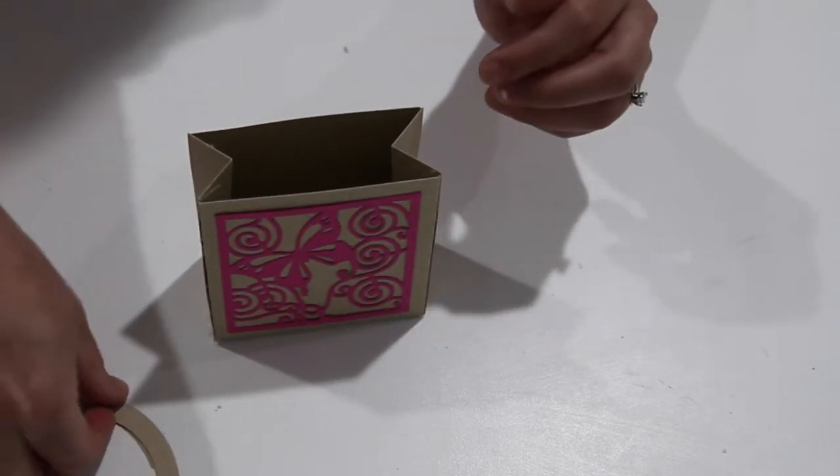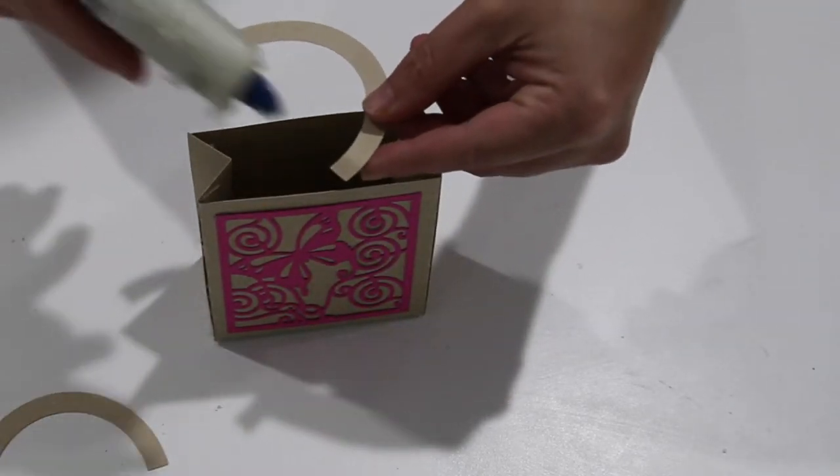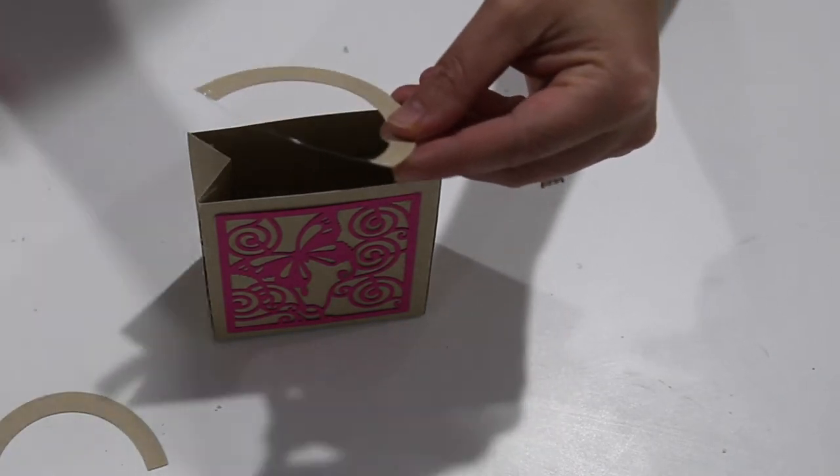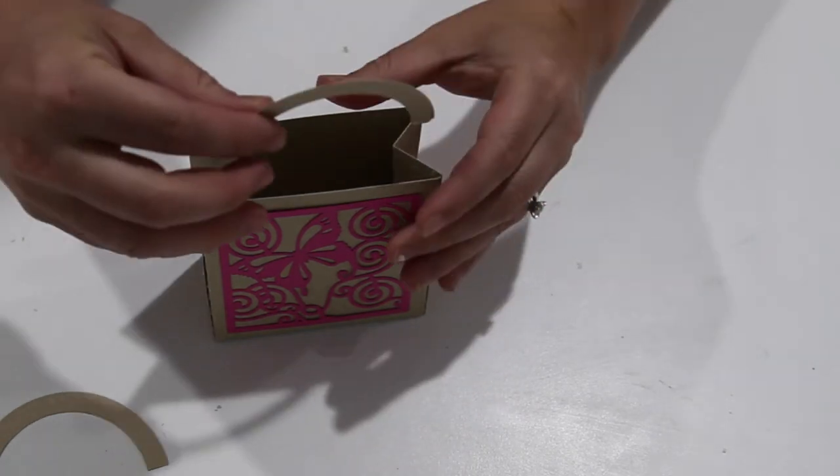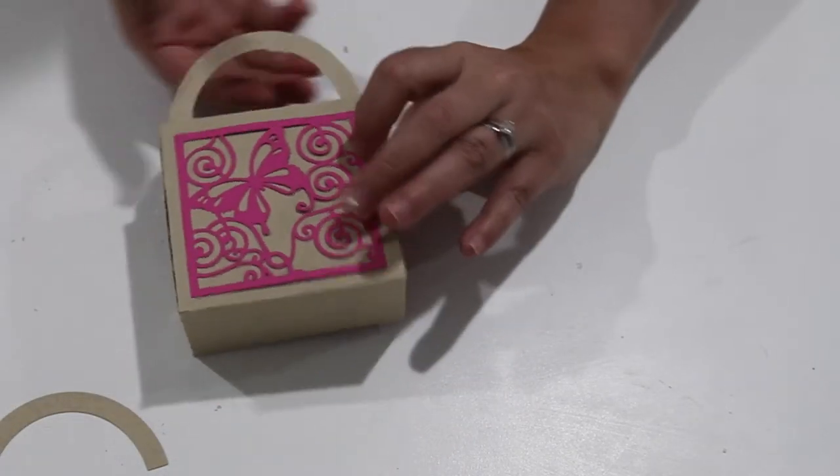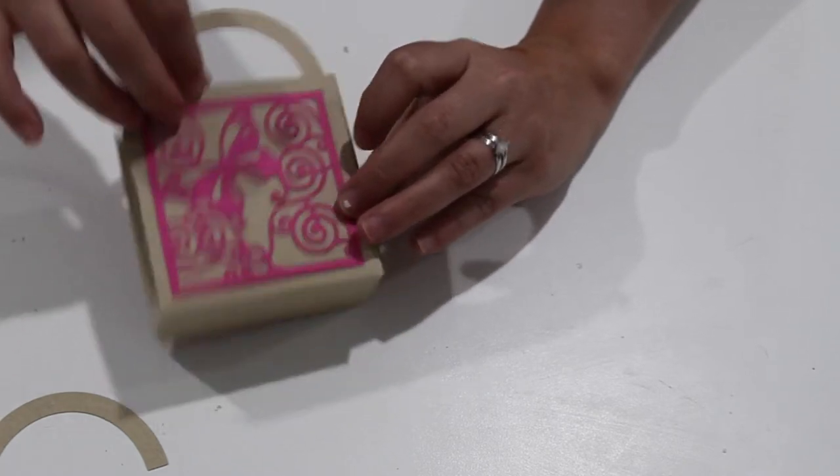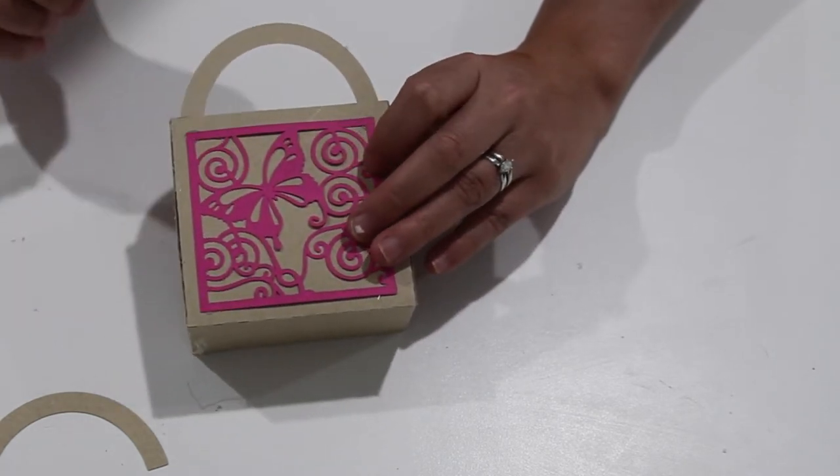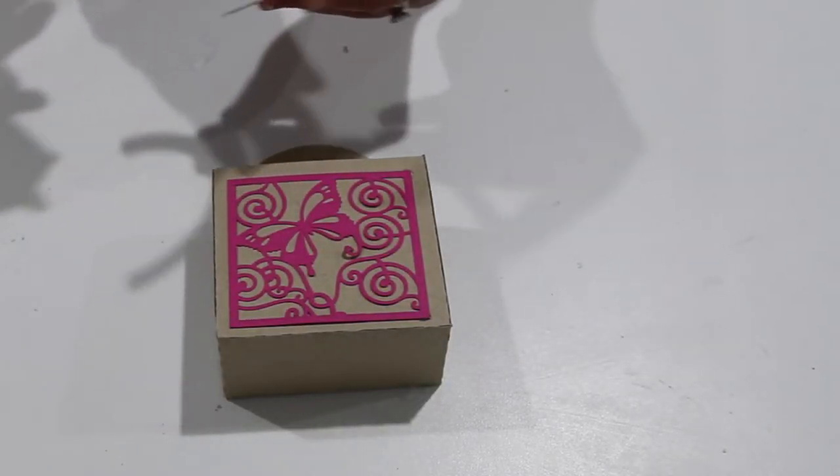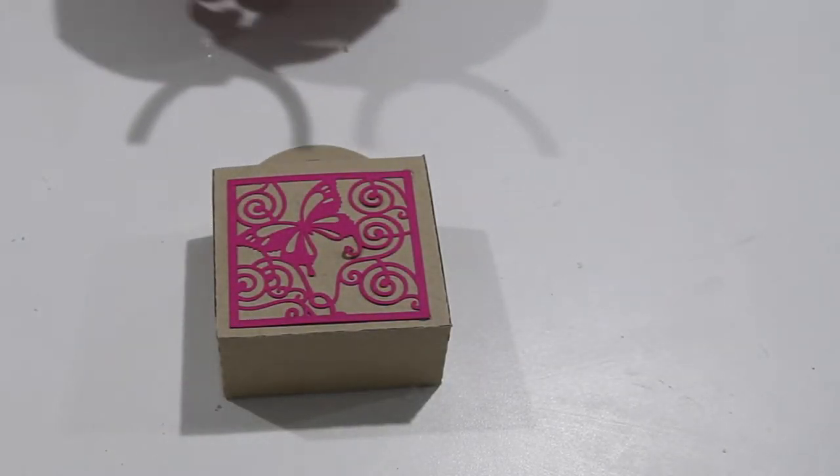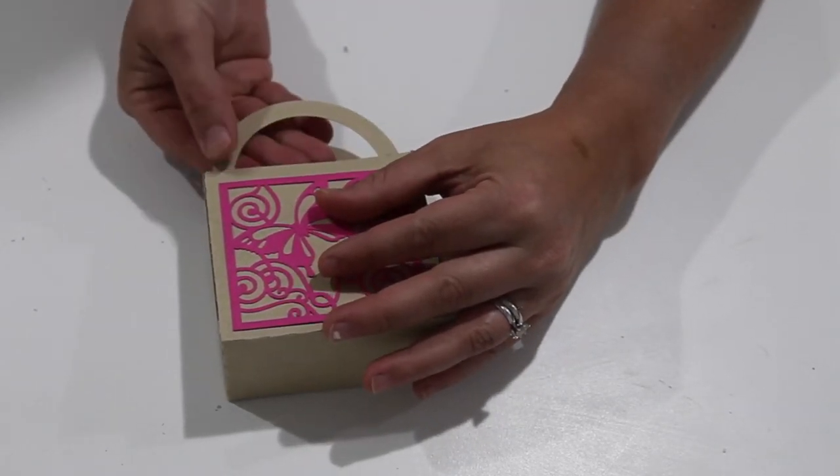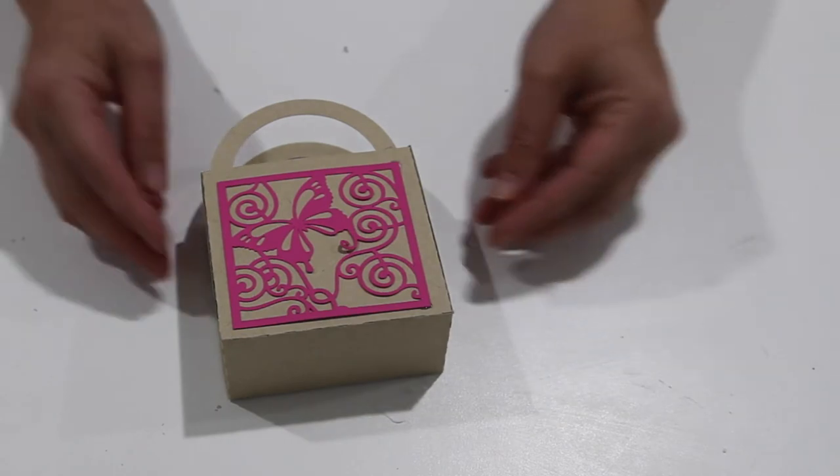So I just put a dab of glue on both of those little edges and I just place them center right to the inside there. I'm going to do that on this other side, just one little dab works great, and you just center it. And there you go, finished. That's pretty quick, right?